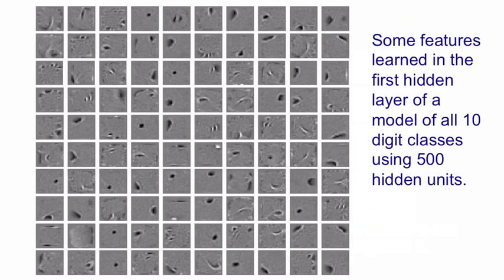So here's some feature detectors that were learned in the first hidden layer of a model that uses 500 hidden units to model all 10 digit classes. And this model has been trained for a long time with contrastive divergence. It has a big variety of feature detectors. If you look at the one in the blue box, that's obviously going to be useful for detecting things like eights. If you look at the one in the red box, it's a curious kind of feature. It's not what you expect to see.